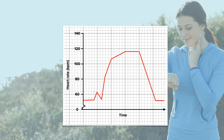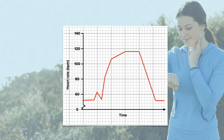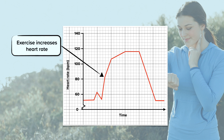We can see on the graph that exercise starts where the heart rate begins to increase at a rapid rate. Heart rate is much higher during exercise, which is represented by the rapid increase on the graph. Can you think why exercise increases heart rate?